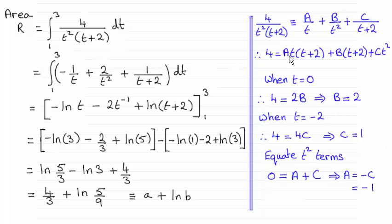You've got A t squared when you expand the bracket, so you're going to have A there. And then the only other t squared term is this one, so the coefficient is C. And so A equals minus C. We know C is 1, so that turns out that A is minus 1.